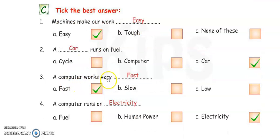Next, number three. Computer works very fast, slow, or low. Yes. It is very easy. Fast. So, you have to tick here and write fast in the blank. F-A-S-T. Fast.